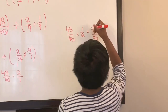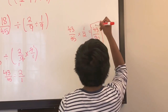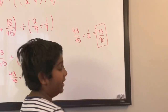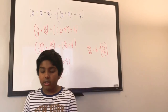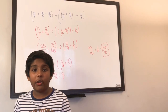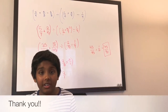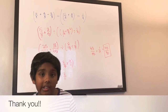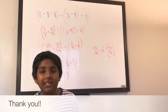So the answer is 43 over 90. That's how you do order of operations with fractions. I'll see you next time — thanks for listening!